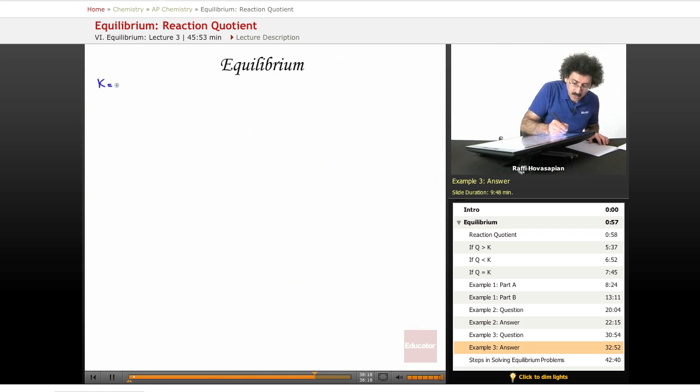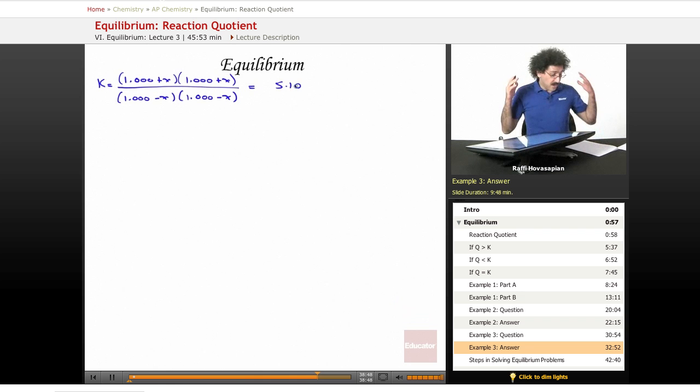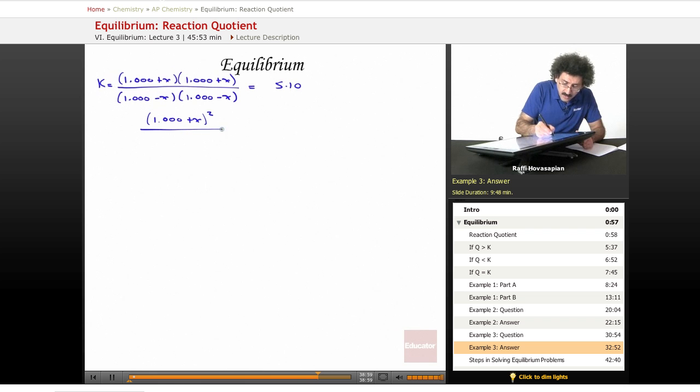So K, which is equal to 1.000 plus X times 1.000 plus X. That's the CO2 and H2 concentrations divided by the CO and H2O concentrations, which at equilibrium is 1.000 minus X, 1.000 minus X. And we know that that equals 5.10. So now let's just handle this algebraically. This is 1.000 plus X squared over 1.000 minus X squared equals 5.10.